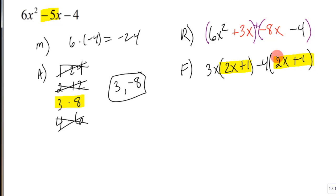Take this 2x plus 1 out. Write it out front or first. And then what you have left is you have the 3x minus 4, and that's what goes in the second one. 3x minus 4.